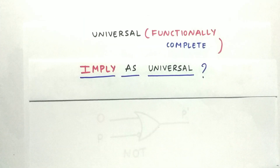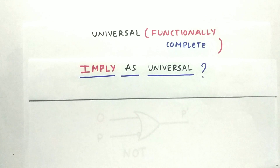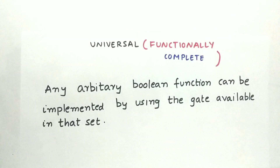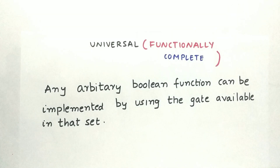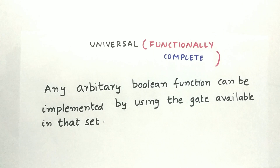My question is: is the implied gate a universal gate or not? To know that, let us understand the definition of a universal set or functionally complete set. Here's the definition: any arbitrary boolean function can be implemented by using the gates available in that set.